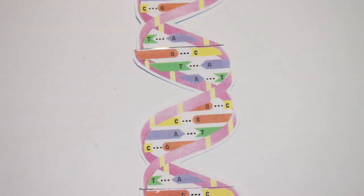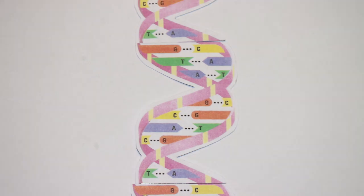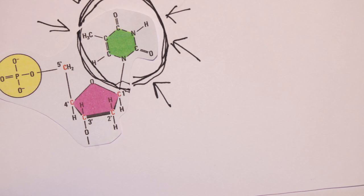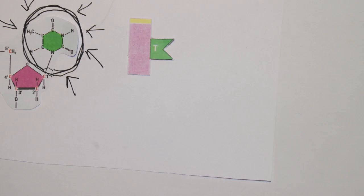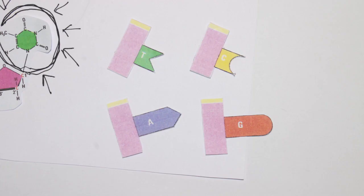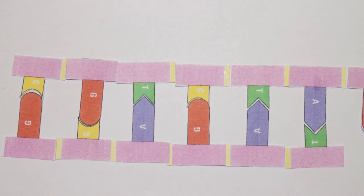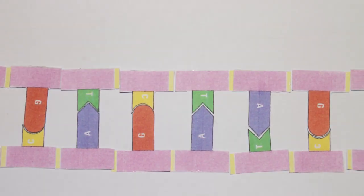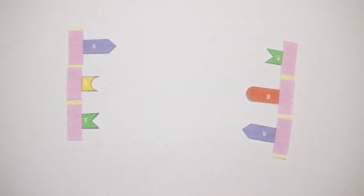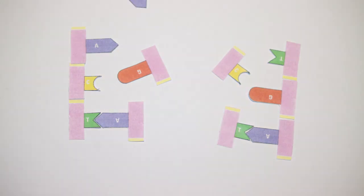This molecule is a double-stranded long chain of nucleotides, and there are four types of nucleotides depending on their nitrogenous base: thymine, cytosine, adenine, and guanine. These bases bond to each other, pairing up always in the same way — thymine always pairs up with adenine, and cytosine pairs up with guanine. So, given one strand of DNA, we can figure out its complementary strand by pairing up the bases. This is the secret ability that allows DNA to copy itself so efficiently.